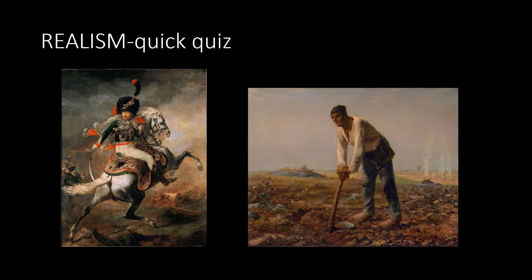Can you spot the realist painting between these two? If you guessed the one on the right, you are correct. This one is a man on a horse and he looks like an important person, like a king who is riding off to battle. Whereas this one looks like an everyday farmer.